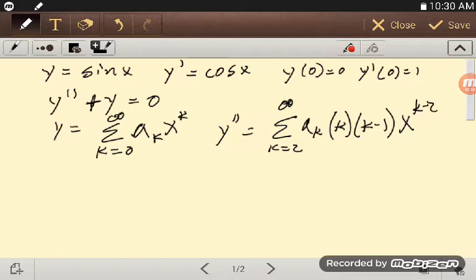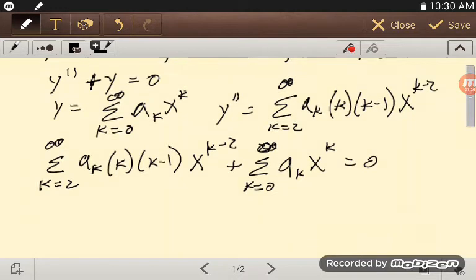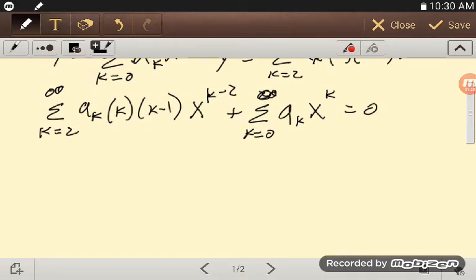Okay, so plug those in. Sum k equals 2 to infinity, a sub k, k, k minus 1, x to the k minus 2, and then plus the sum k equals 0 to infinity, a sub k, x to the k, and that's all 0.